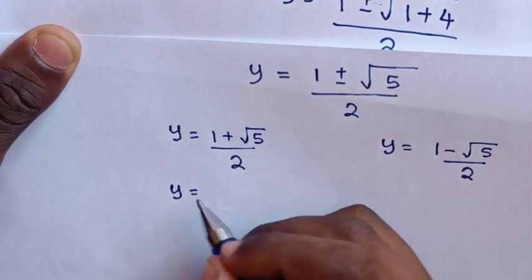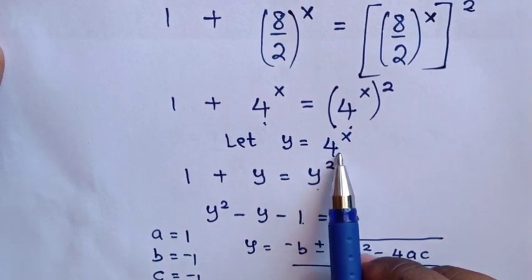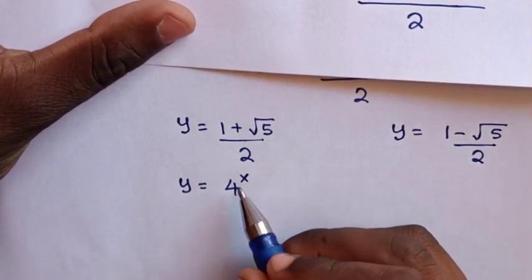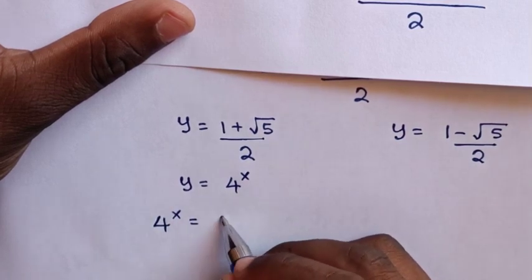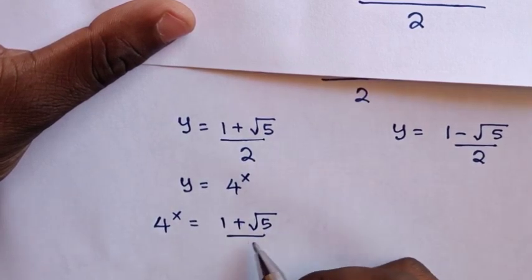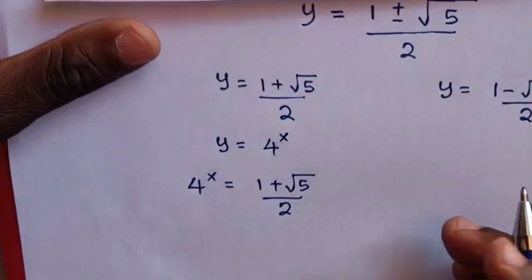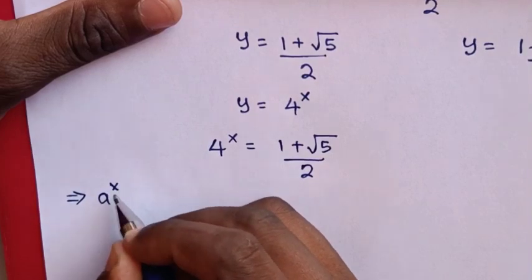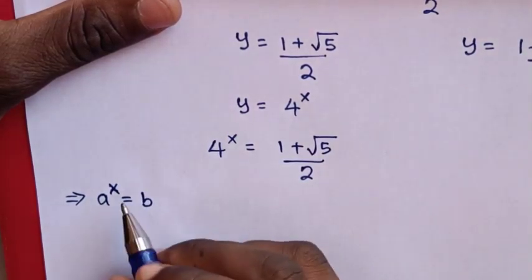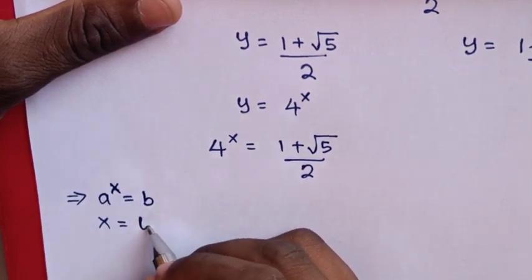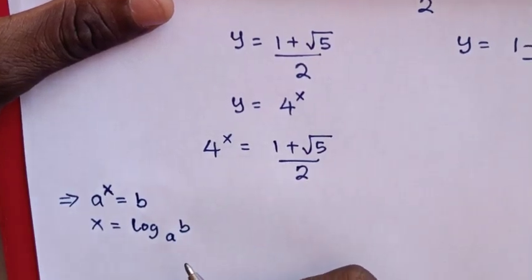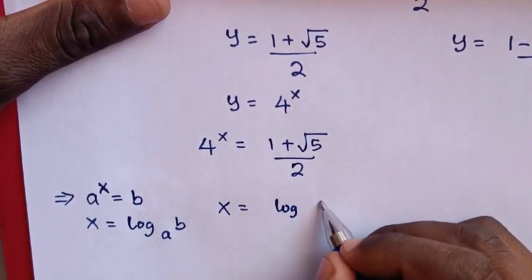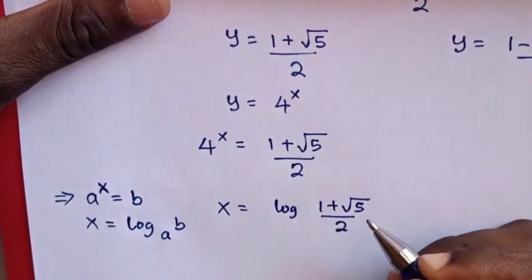Remember that we let y = 4^x. Recalling this substitution and comparing with the first solution: 4^x = (1 + √5) / 2. To find x from an equation of the form a^x = b, we use x = log_a(b). So x = log base 4 of ((1 + √5) / 2).